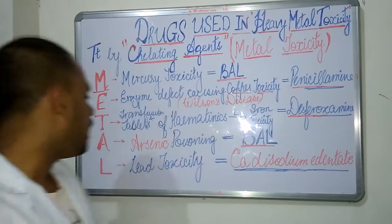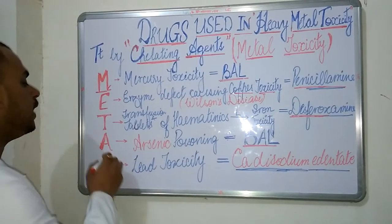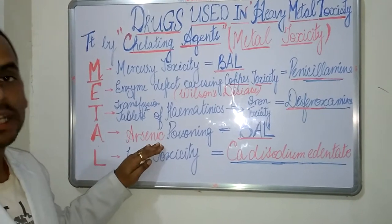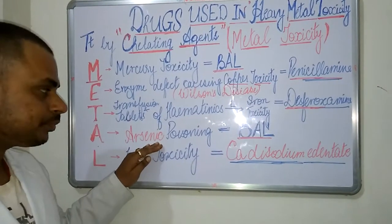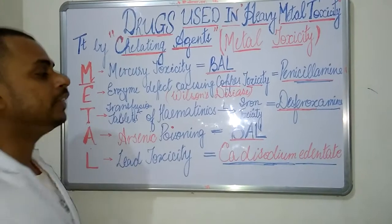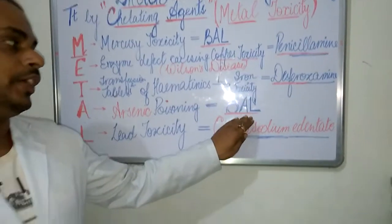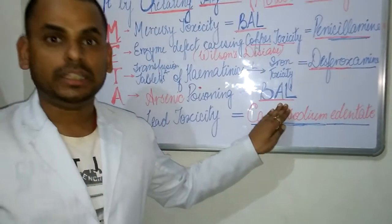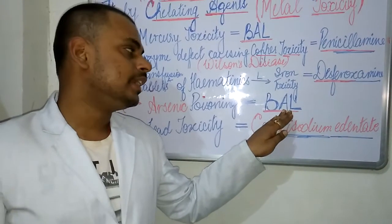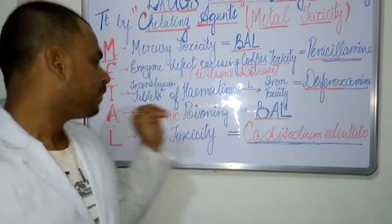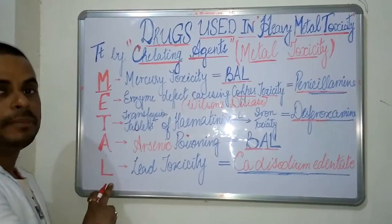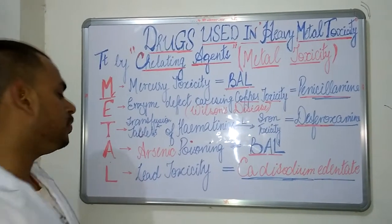The A of METAL refers to arsenic poisoning. The drug of choice for arsenic poisoning is British anti-lewisite (BAL).